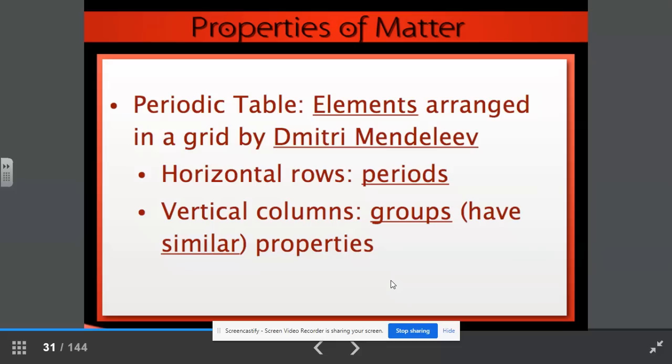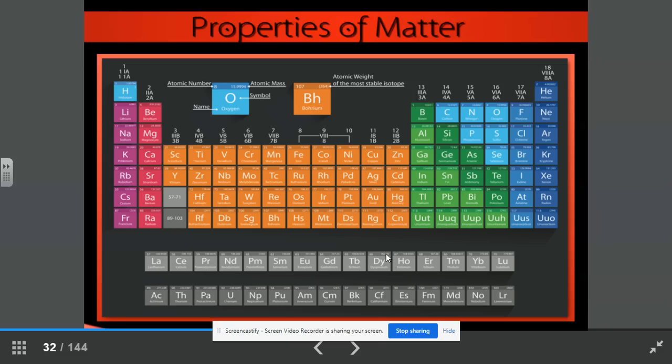The periodic table. The elements arranged in a grid by Dmitry Mendeleev. Remember the horizontal rows are called periods. There are seven of those. The vertical columns are called groups. There are 18 of those. And they have similar properties. Here is a picture of our periodic table, thanks to Dmitry Mendeleev.